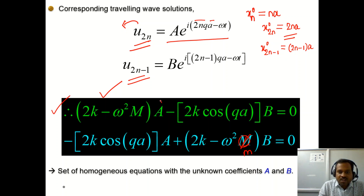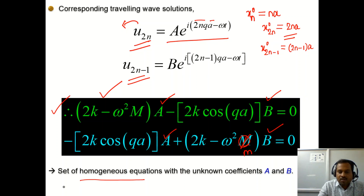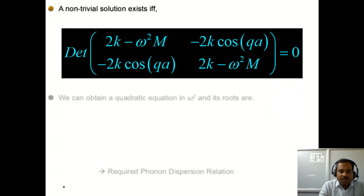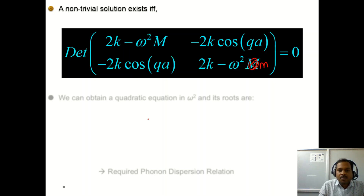These are homogeneous equations with unknown coefficients A and B yet to be found. For a non-trivial solution (A and B not both zero) to exist, the determinant of the coefficient matrix must be zero. Setting this determinant equal to zero gives the condition for the non-trivial solution.